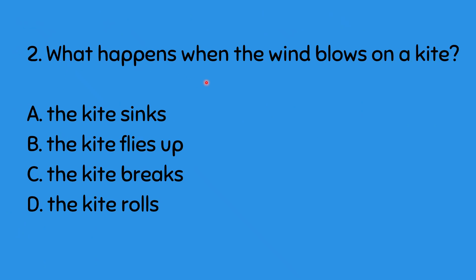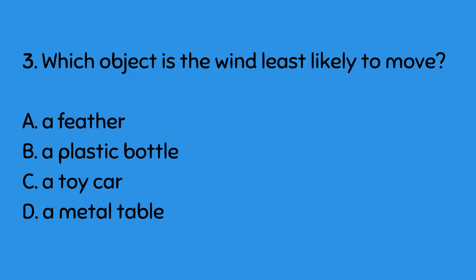Number 2: What happens when the wind blows on a kite? Number 3: Which of the following objects is the wind least likely to move? A. A feather, B. A plastic bottle, C. A toy car, D. A metal table.